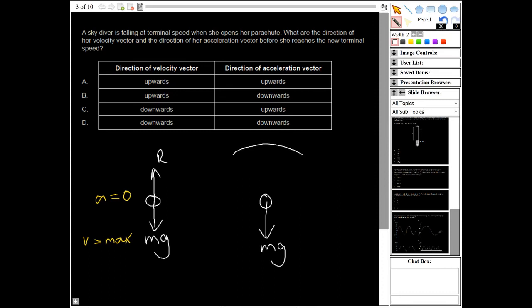mg. However, because we've now got a large parachute here, there's going to be a much greater air resistance than there was before. So this R here is going to be much, much greater than it was before. So you should be able to see here that now there's going to be an acceleration upwards.